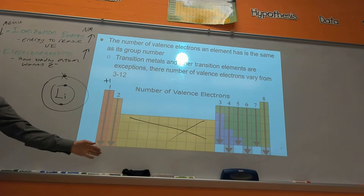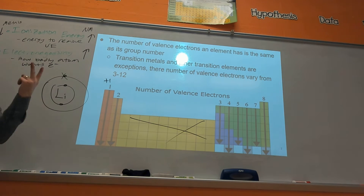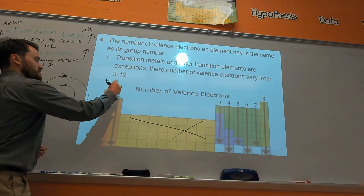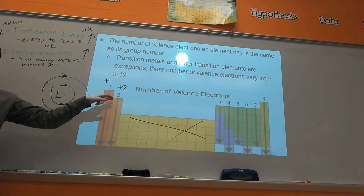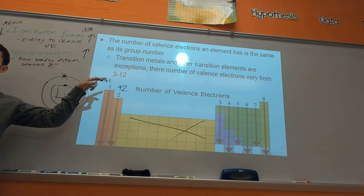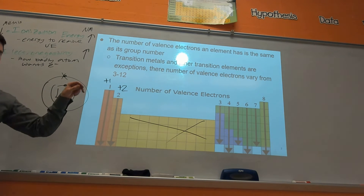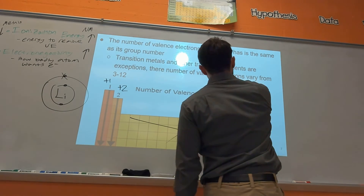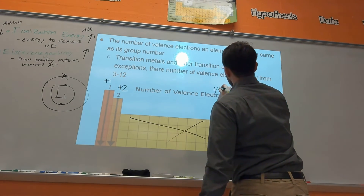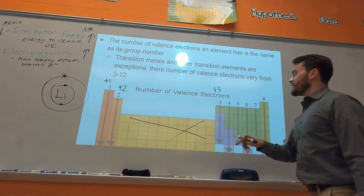If you're in group two, you need to lose two valence electrons, so you become plus two. Go ahead and add that: plus one, plus two. If something is in group three, it becomes plus three.